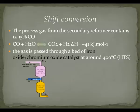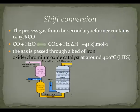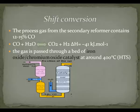Moving on to shift conversion: in the shift conversion process, the reforming process produces undesired carbon monoxide, which needs to be removed. The gas is passed through a bed of iron oxide and chromium oxide catalysts at around 400 degrees Celsius, which is called the high-temperature shift conversion, or HTS.